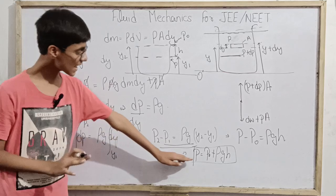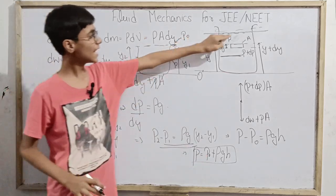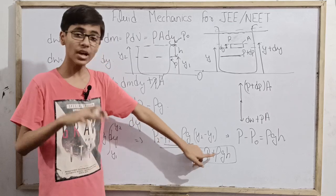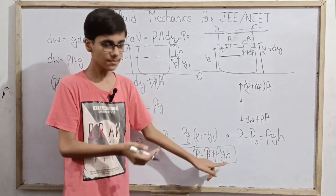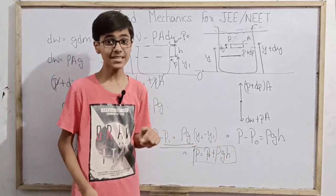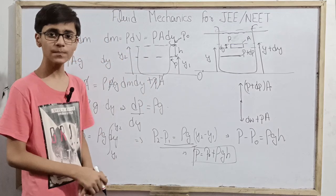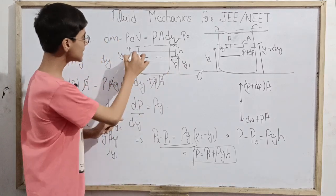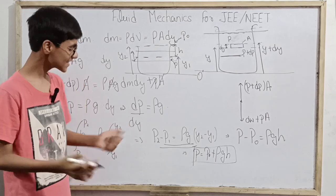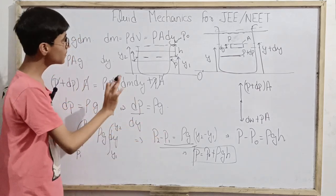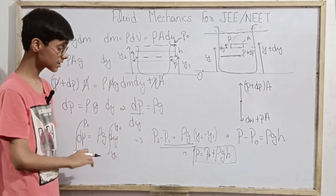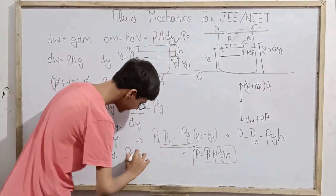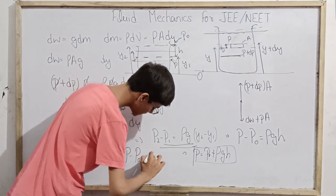Therefore P = P0 + ρgh. Here P0 is the pressure at the surface of the fluid — the surface pressure. At depth h below the surface, the pressure is P0 plus an additional amount ρgh. This is the key equation of fluid statics.